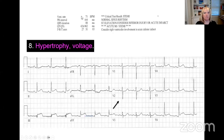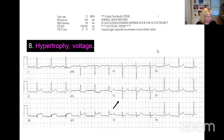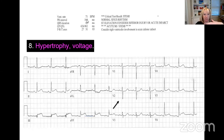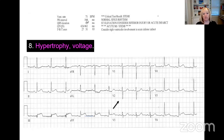Step eight is looking at the voltage. If there are big R waves, that means something. If it's really big, you're worried about hypertrophy — thickening of the tissue. If the R wave is really small, you're worried about something being in the way, and the worst thing would be somebody having like a pericardial effusion.